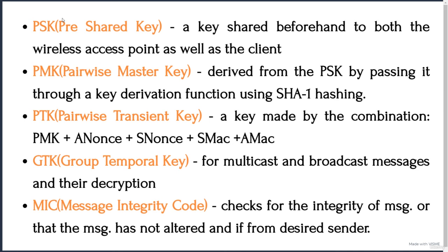To recap: the Message Integrity Code is used to confirm that messages are coming from a legitimate and desired sender. So to summarize all the keys — first is the PSK, or Pre-Shared Key. Second is the PMK, Pairwise Master Key, which we get by deriving the PSK through an algorithm. After that we have PTK, derived by combining PMK, SNonce, ANonce, SMAC, and AMAC. The next one is the GTK, Group Temporal Key, used for encrypting multicast, unicast, or any type of messages in the network. The last one is the Message Integrity Code, for checking the integrity of messages.